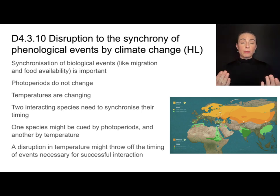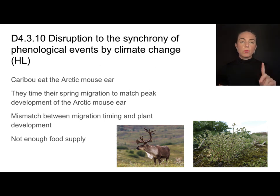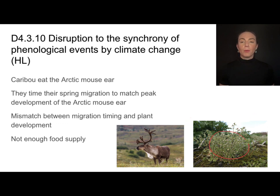This causes a major disruption in the ecosystem. For example, the caribou's migration is set off by photoperiodism — by daylight hours in a single day — and is usually synchronized to match the timing of the Arctic mouse ear plant that they eat. Their movement matches the blooming or bud burst of this plant. If there is a mismatch in the timing of migration and bud burst, those events are no longer synchronized, and the caribou will not have enough food supply.